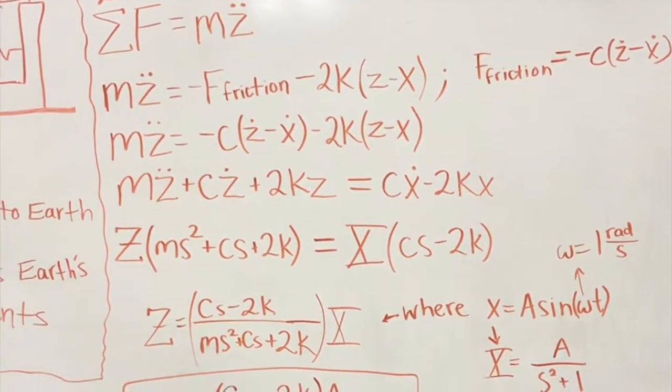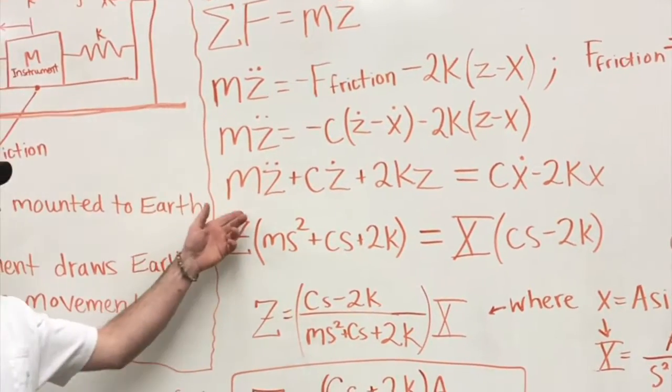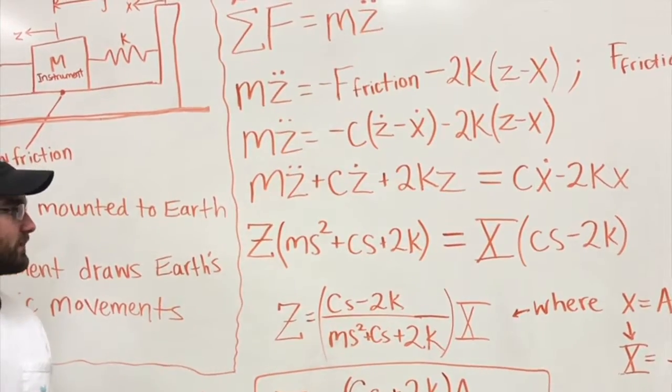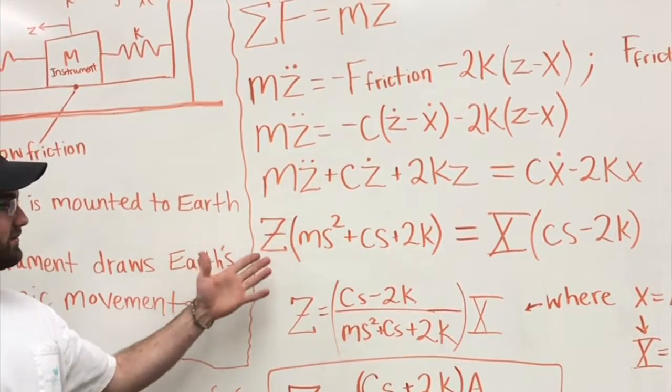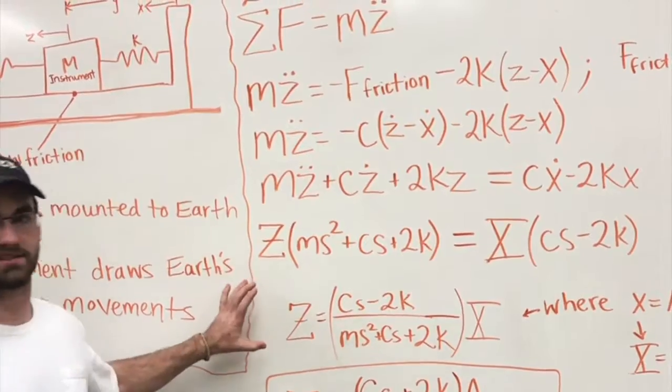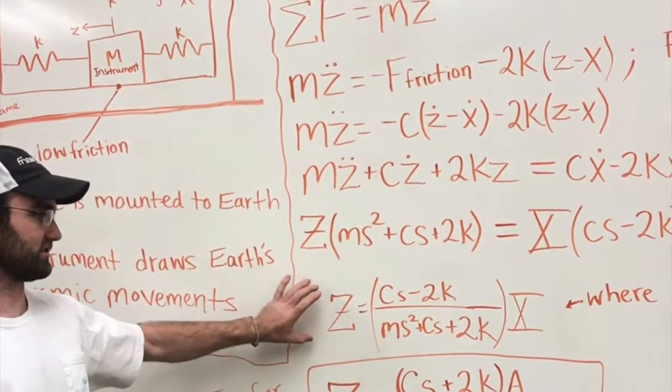The next step is to solve for like terms on each side of the equal sign. Once we did that, we can start breaking it apart in order to get to the next step to get the transfer function.